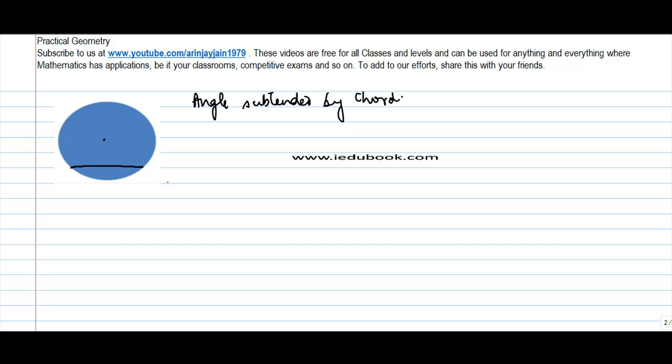Let's suppose we have a chord here called the chord AB. Now if you have any other point on this circle, let's say we have a point M here.